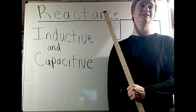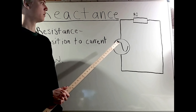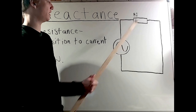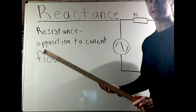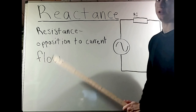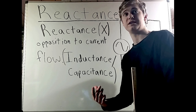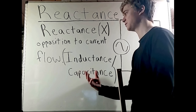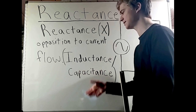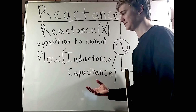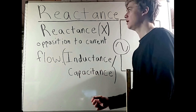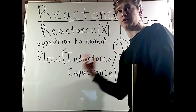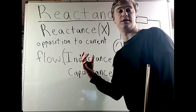Inductive and capacitive reactance. In a purely resistive circuit, resistance is the opposition to current flow. When thinking about an AC circuit that does not have resistance but instead has only inductance, capacitance, or both, then reactance would be the opposition to current flow in that circumstance.